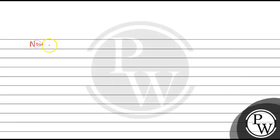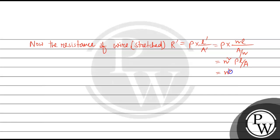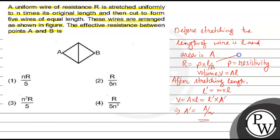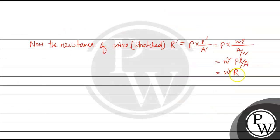Now the resistance of wire in stretched position, let's say R prime equal to rho into L prime by A prime. That is rho into N into L by A by N equal to N square rho L by A. So we can write N square R. Let's say this is actually number 1.